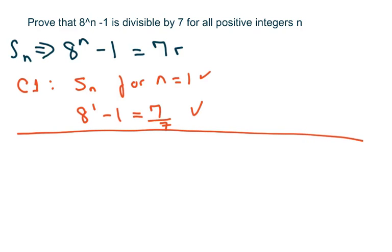Okay, the next piece is condition 2 and we're going to assume that the statement is valid for n equals k. Okay, so I'm going to write my statement with k.